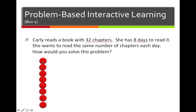So I'm going to make a column with my counters. And this represents one chapter. And if Carly reads one chapter for each day, then that would be 8 chapters. So, one chapter a day is not enough. This is 1 day, 2 days, 3, 4, 5, 6, 7, 8.